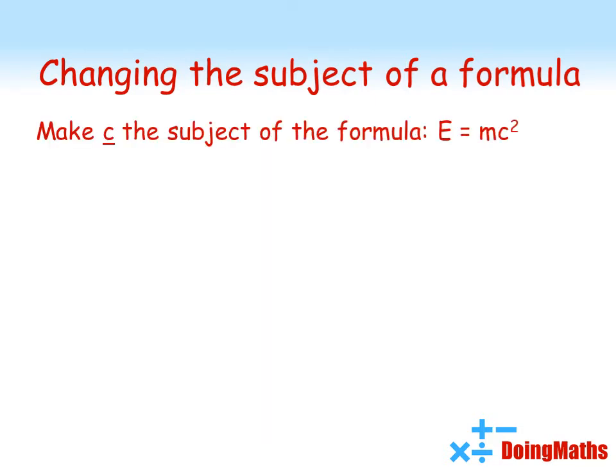Here's another famous formula we're going to have a go at now. The formula E equals MC squared—we want to make C the subject of this formula. So again our aim is to have a formula that is C equals some expression that doesn't have a C in it.